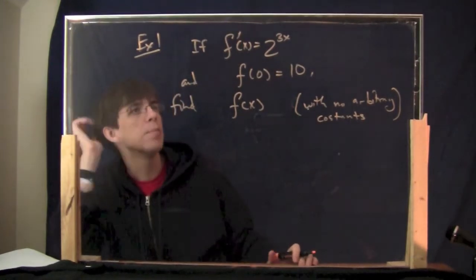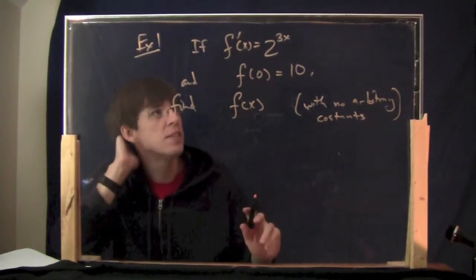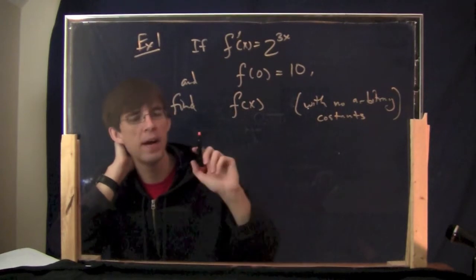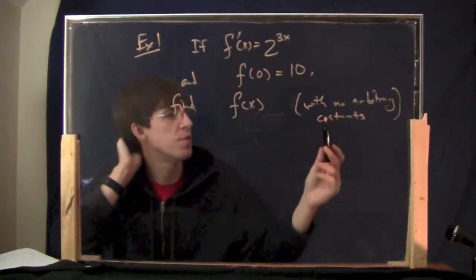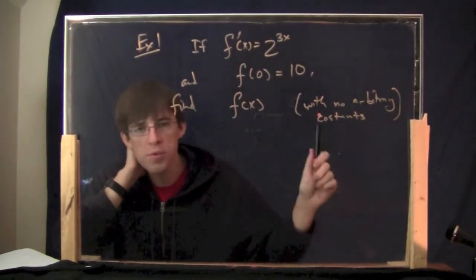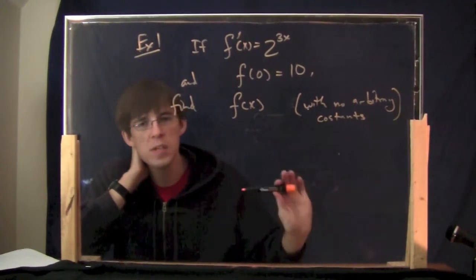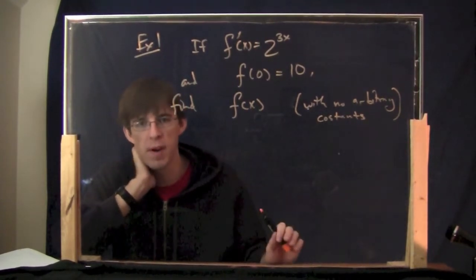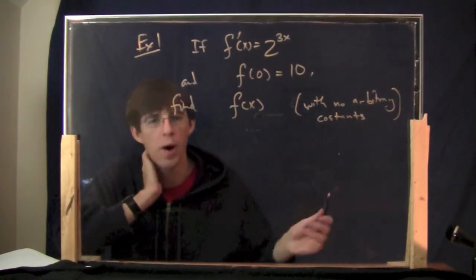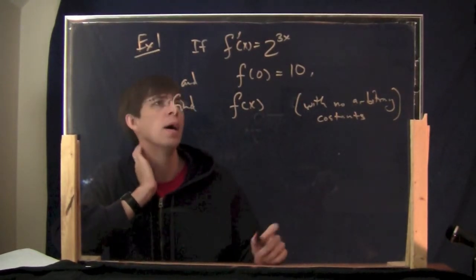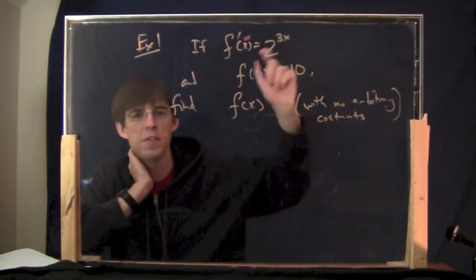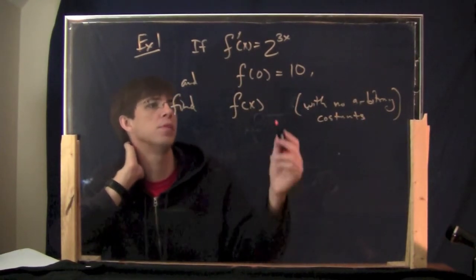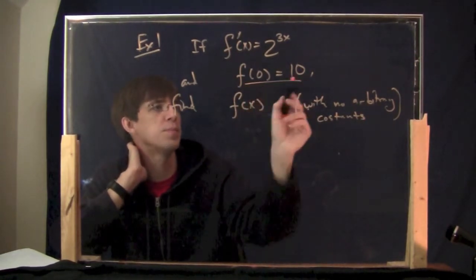Here's an example to try out. If f prime of x is 2 to the 3x and f of 0 equals 10, then find f of x — with no arbitrary constants. That means I don't want to see a plus c in your answer; I just want a formula for f of x with no unknowns. This kind of situation is called an initial value problem.